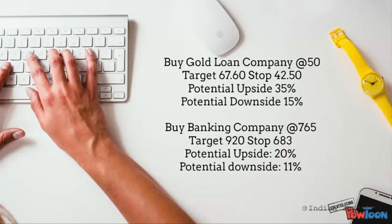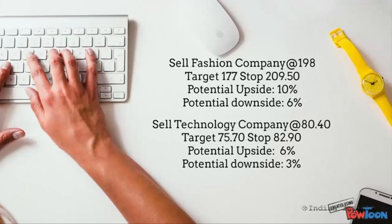Here are some of the trade ideas that you may generate by using my strategies. Buy a gold loan company around 50, target of 67.6 and stop loss of 42.5 — a potential upside of 35% and potential downside of only 15%. Or buy a banking company around 7.65, target of 9.20 and a stop of 6.83, potential upside of 20% while a potential downside of only 11%. Sell a fashion company around 198, target of 177, stop of 209.5.